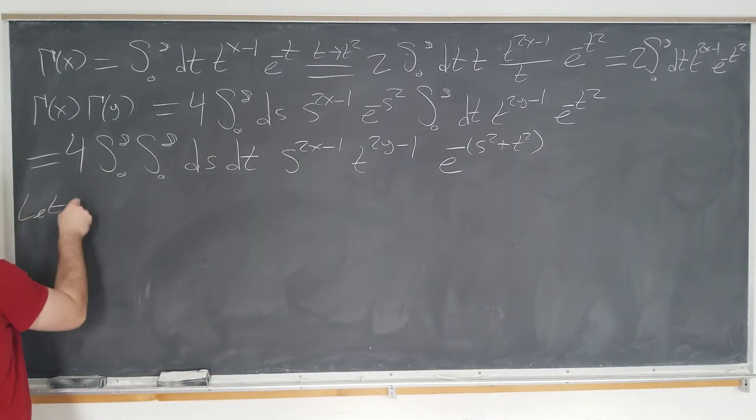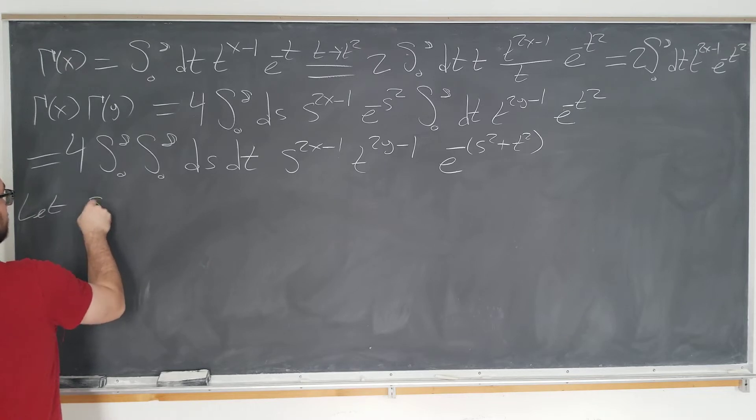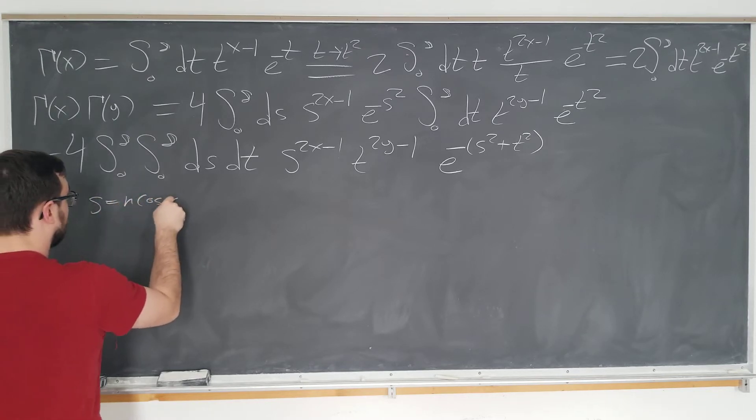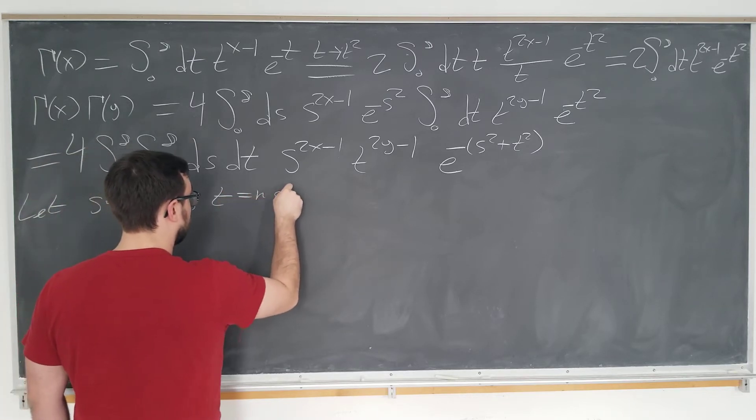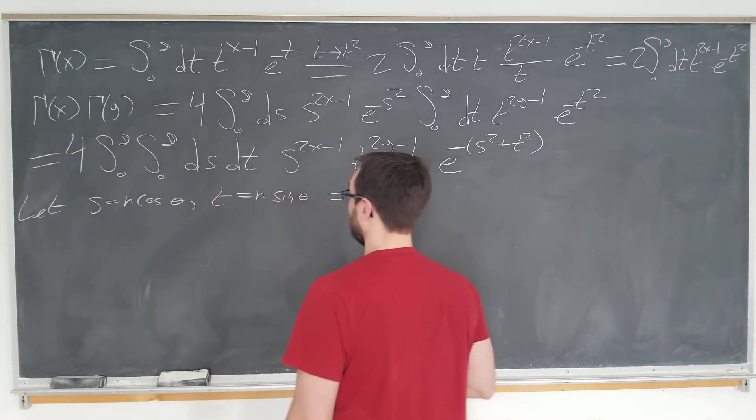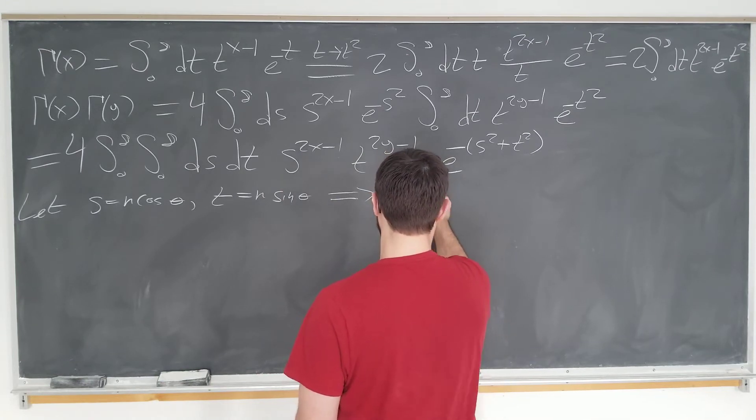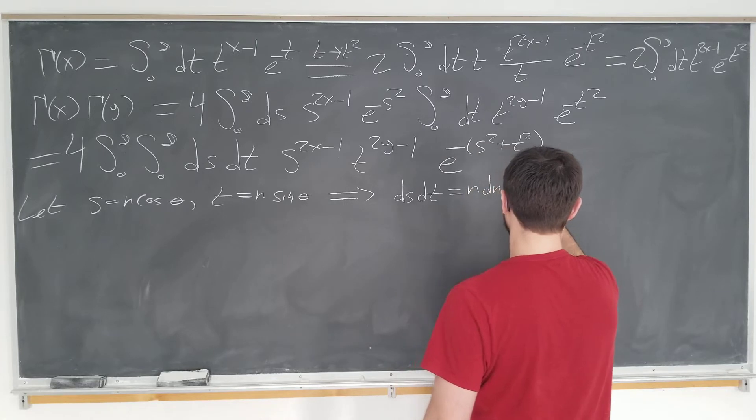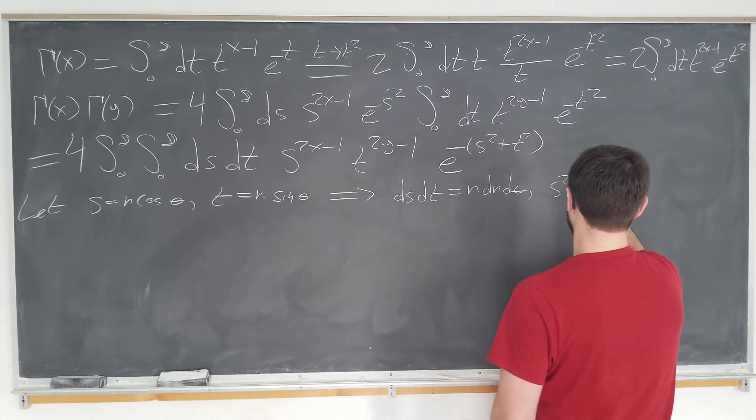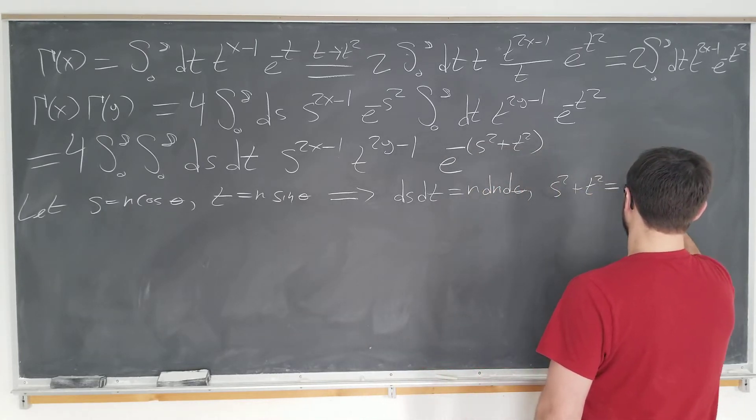After we write down explicitly our hunch here. So, four, zero to infinity. And we got two of those. We have ds, dt. And these bad boys don't change yet. S to the 2x minus 1 t to the 2y minus 1. But what's cool is we now have an e to the minus s squared plus t squared, as I said. Now we're going to do the polar coordinate transformation. So, if we let s to be r cosine of some angle theta, t to be r sine of some angle theta, well, we know immediately that we can write ds, dt as r, dr, d theta. And s squared plus t squared is equal to r squared.